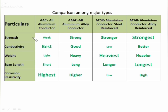As per comparison: strength of AAC conductor is very low (weakest), while ACSR is the strongest. Conductivity of AAC is the best. Weight-wise, AAC is the lightest, while ACSR being steel-composed is the heaviest. Span length of AAC should be kept short, while that of ACSR should be the longest. Corrosion resistance of AAC is highest — it can be used in coastal areas where corrosion probability is more, and also in dry areas.